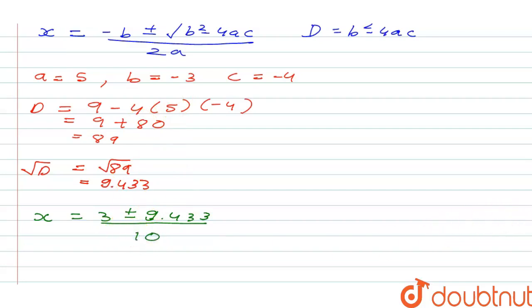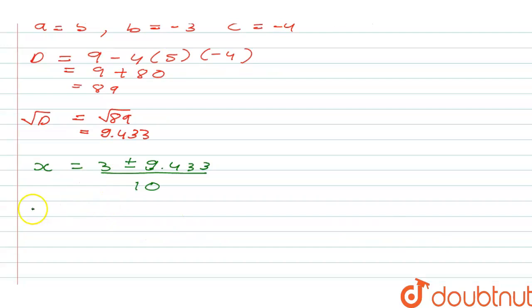Now we have two solutions, that is x equal to either 3 + 9.433 by 10 or x equal to 3 - 9.433 by 10.